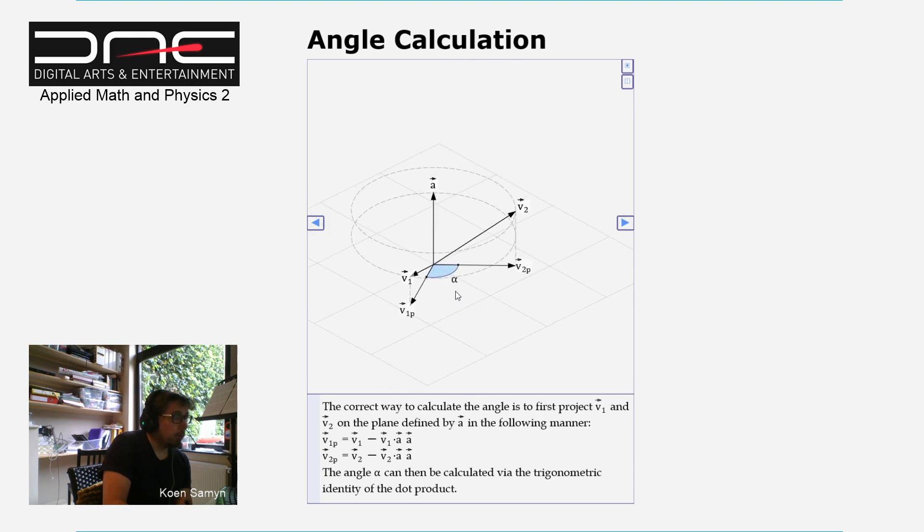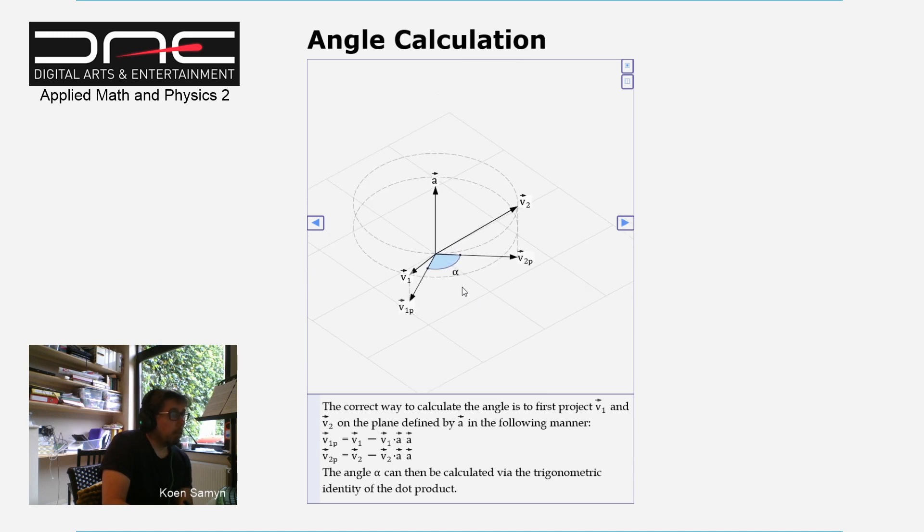Which gives you the correct result, and this angle is easily calculated with the trigonometric identity of the dot product. So you have alpha is the arc cosine of the dot product V2P dot V1P divided by the multiplication of the lengths of those two vectors.